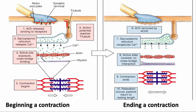Acetylcholinesterase is an enzyme that breaks acetylcholine into two pieces, neither of which can stimulate the receptor. That will eventually lead to a lack of action potential in the muscle fiber because the receptors aren't being stimulated, and that in turn is going to close those voltage-sensitive channels that have been allowing calcium to flood into the sarcoplasm.